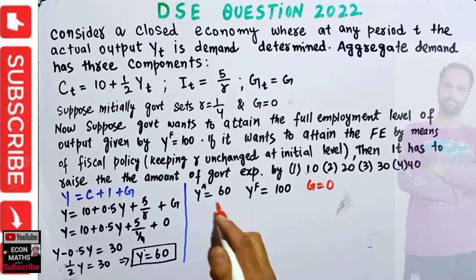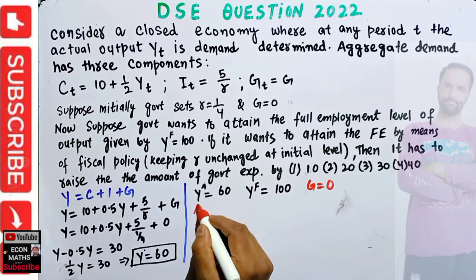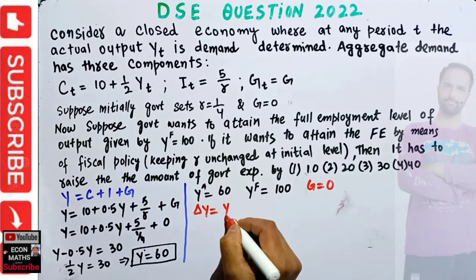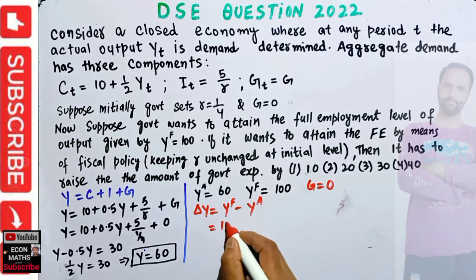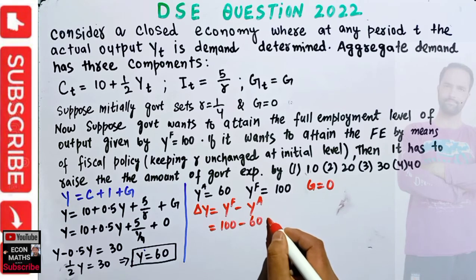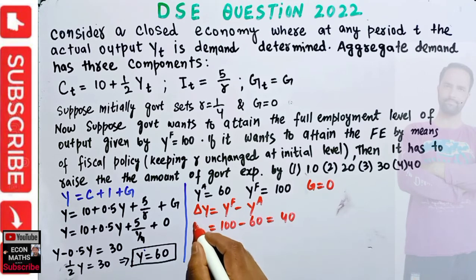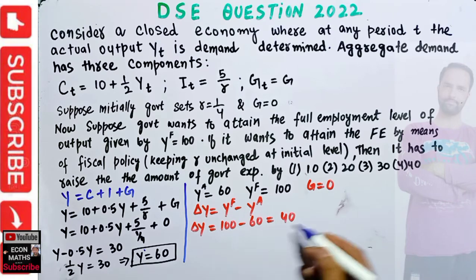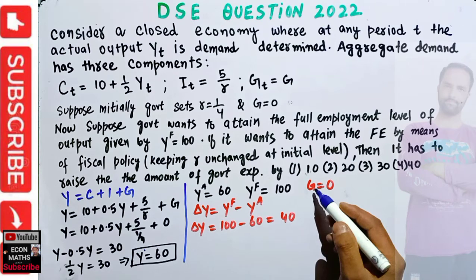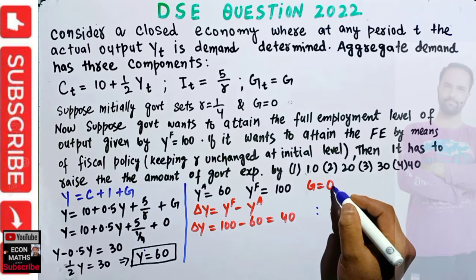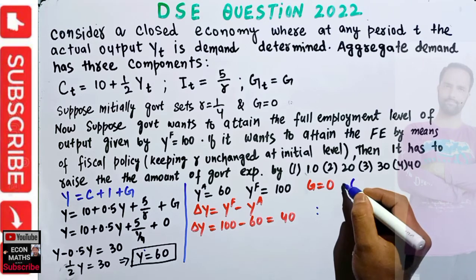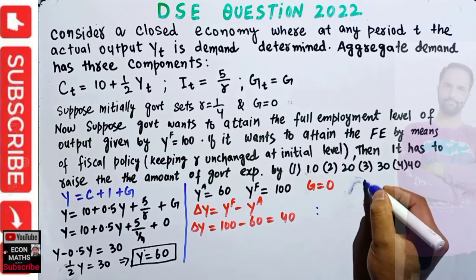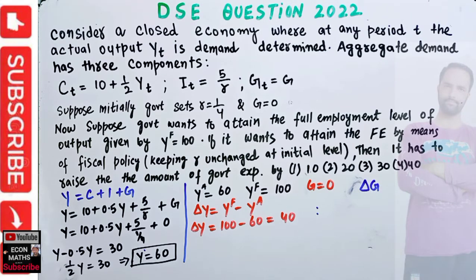We need to find the change in government expenditure required to achieve this output level. The change in output required equals full employment output minus actual output: 100 − 60 = 40. So we need to change the output level by 40 by means of government expenditure. Let's denote the change in government expenditure as ΔG.